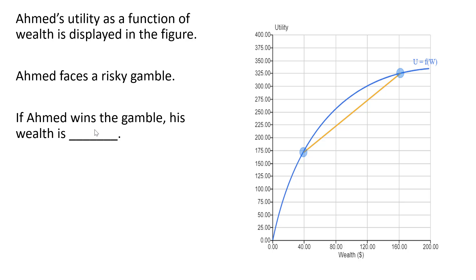If Ahmed wins the gamble, his wealth is $160, getting utility of about $325. If Ahmed loses the gamble, his wealth will be $40, corresponding to a utility of $175.